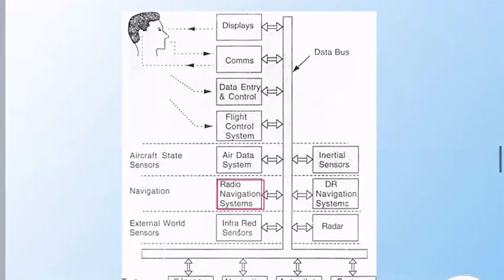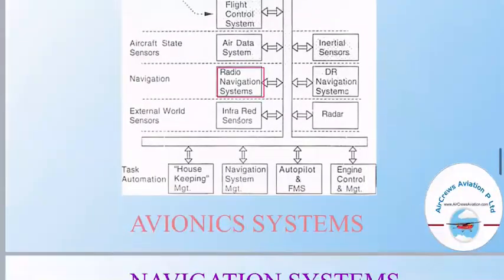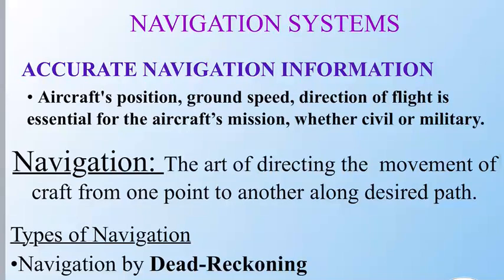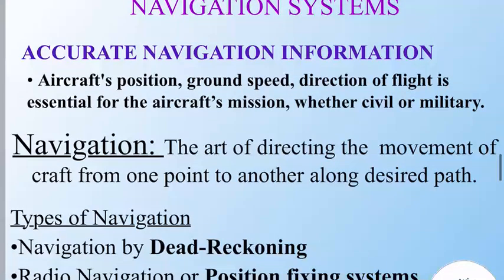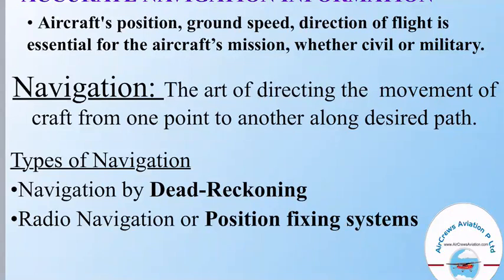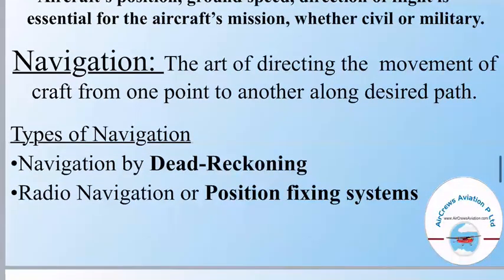Now we will talk about the radio navigation systems. An accurate navigation system is important — aircraft position, ground speed, and direction of flight are essential for the aircraft's mission, whether civil or military. Navigation is basically the art of directing the movement of an aircraft from one point to another along the desired path. There are two types: navigation by dead reckoning, and radio navigation, also called position fixing navigation.